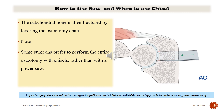The subchondral bone is then fractured by levering the osteotomy fragment. Some surgeons prefer to perform the entire osteotomy with chisels rather than with a power saw.